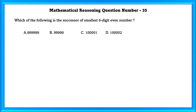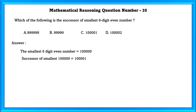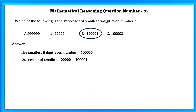Mathematical reasoning question number 35. Which of the following is the successor of the smallest six-digit even number? The smallest six-digit even number is 1,00,000. The successor of that is 1,00,001.